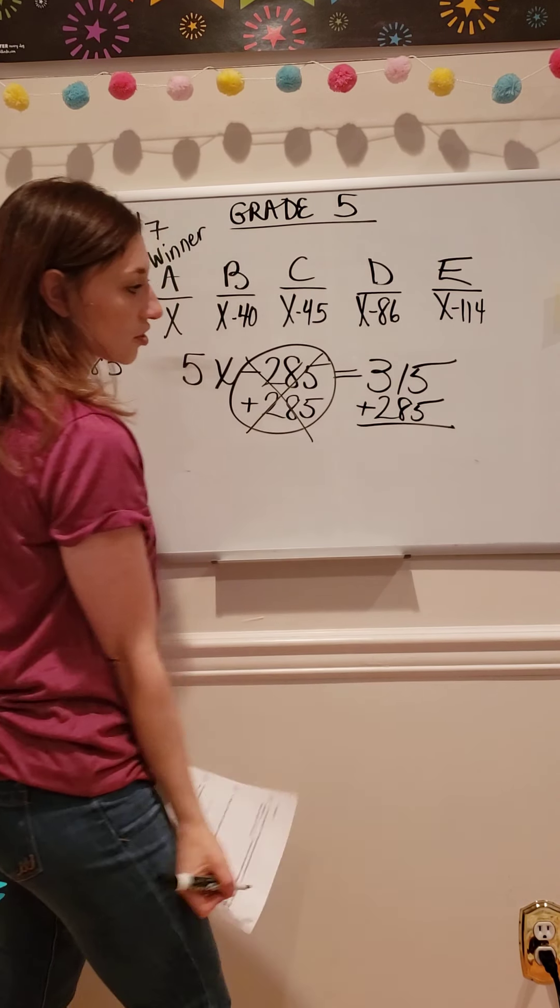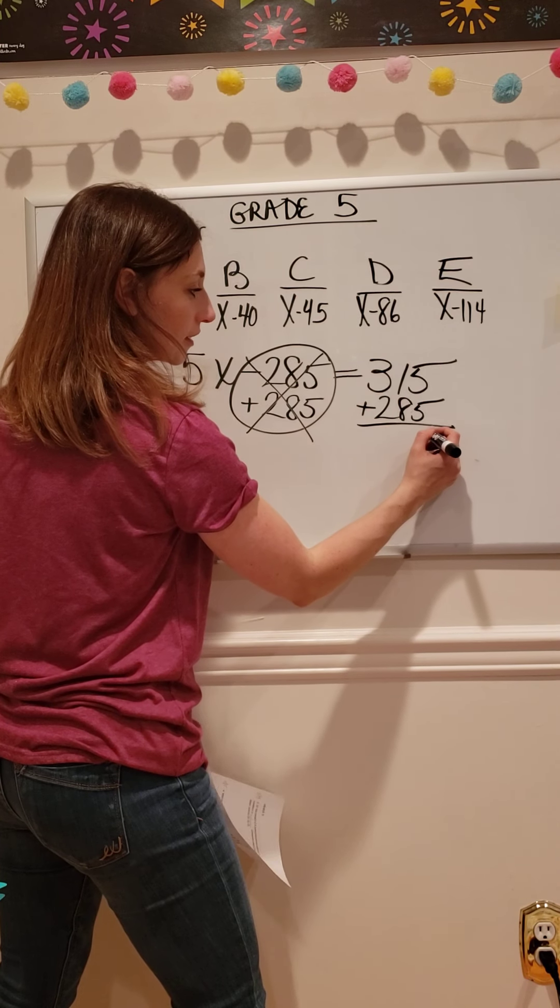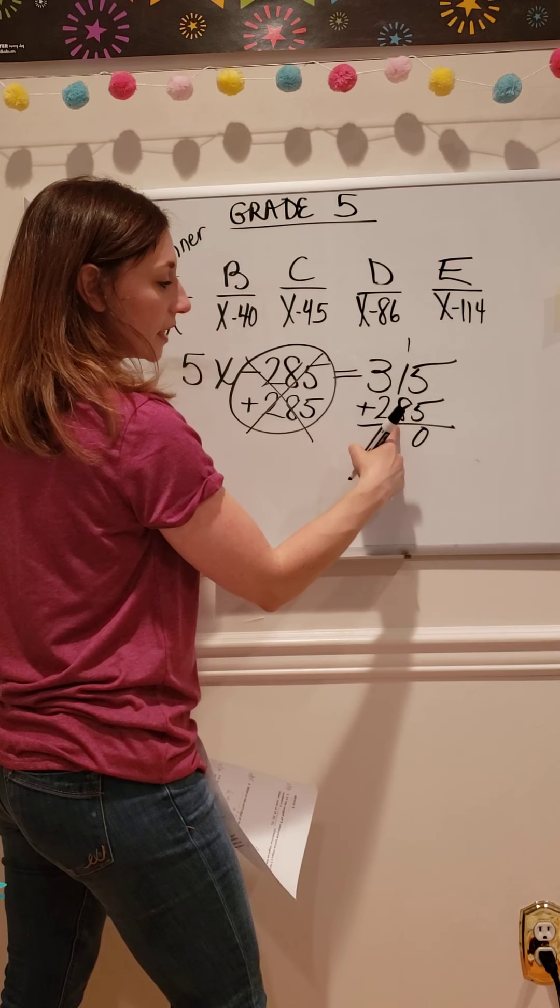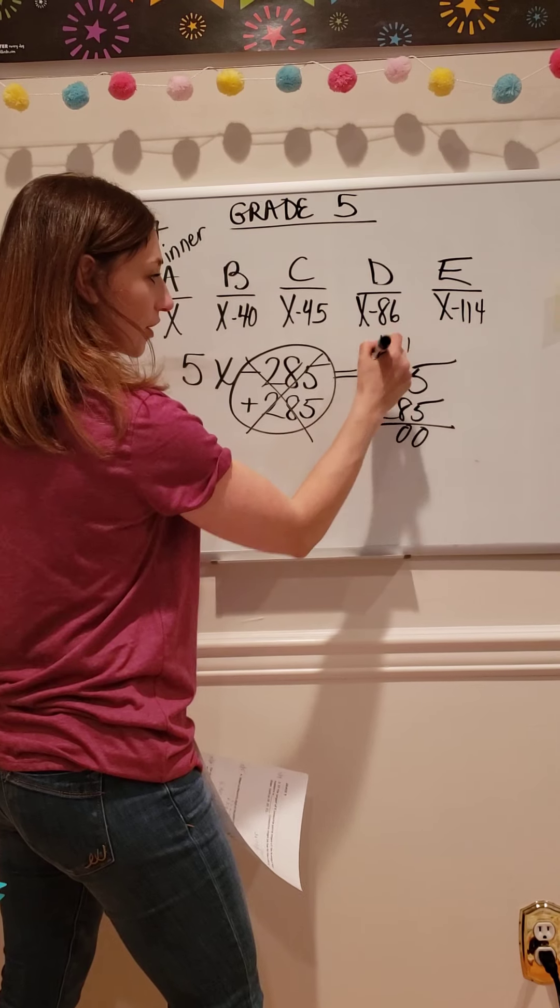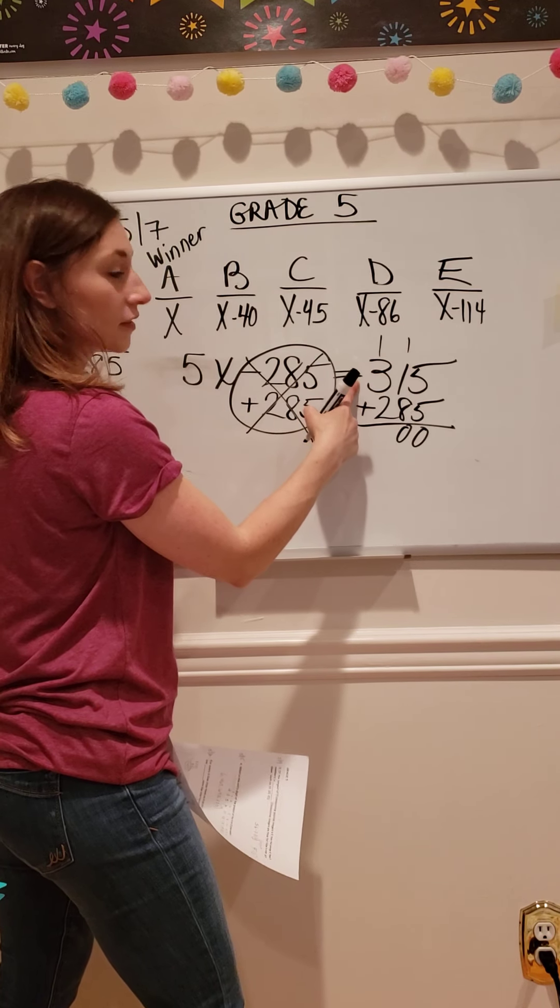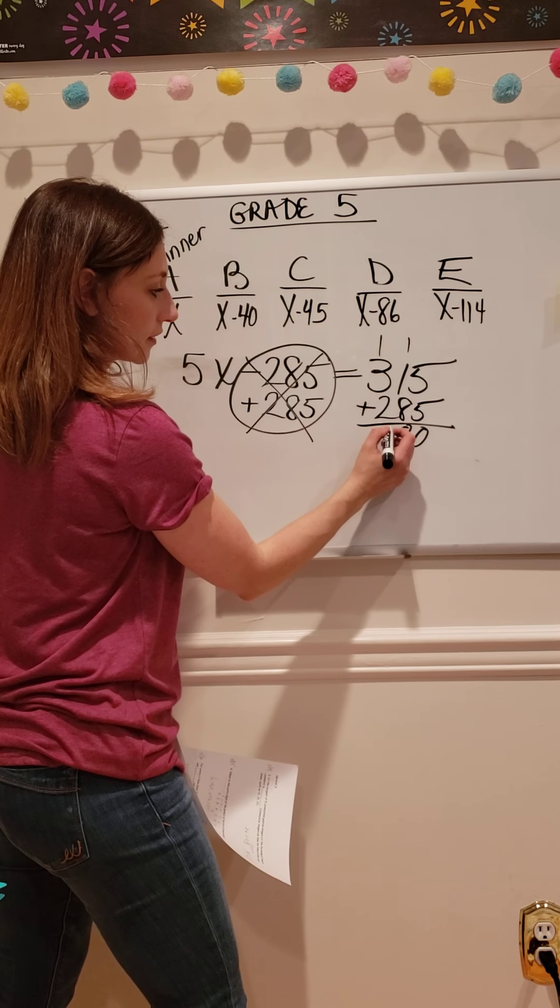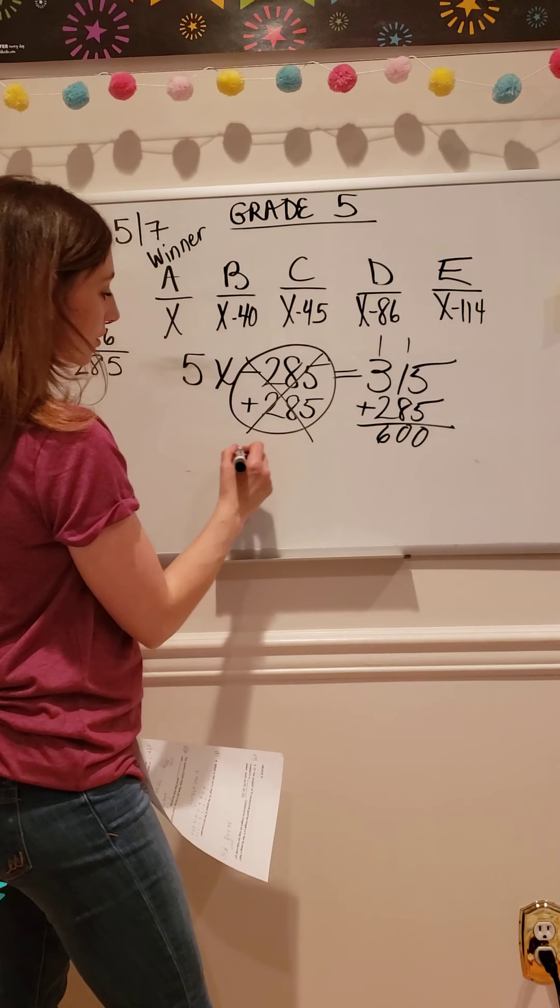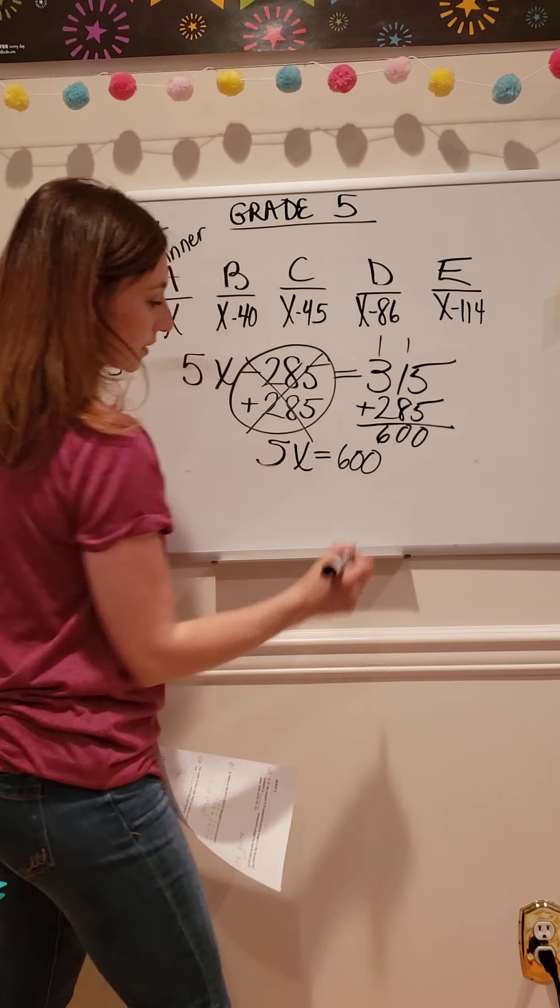So 315 plus 285. 5 plus 5 is 10, carry the 1. 1 plus 1 is 2, 2 plus 8 is 10, put down the 0, carry the 1. What's 1 plus 3? 4. What's 4 plus 2? 6. Good job. So now I have 5X is really equal to 600.